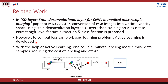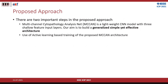Active learning has become an integral part of most architectures recently because it can reduce the cost of labeling by eliminating the labeling of more similar data samples. There are two important steps in the proposed approach: the first is to build a generalized, simple yet effective CNN architecture — we call it Multi-Channel Cytopathology Analysis Net — and the second is to use active learning based training to get better performance with less labeled data.